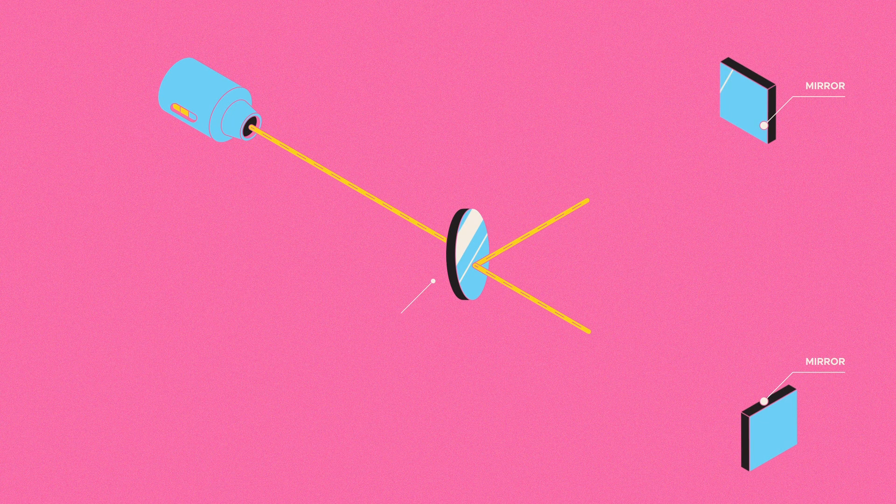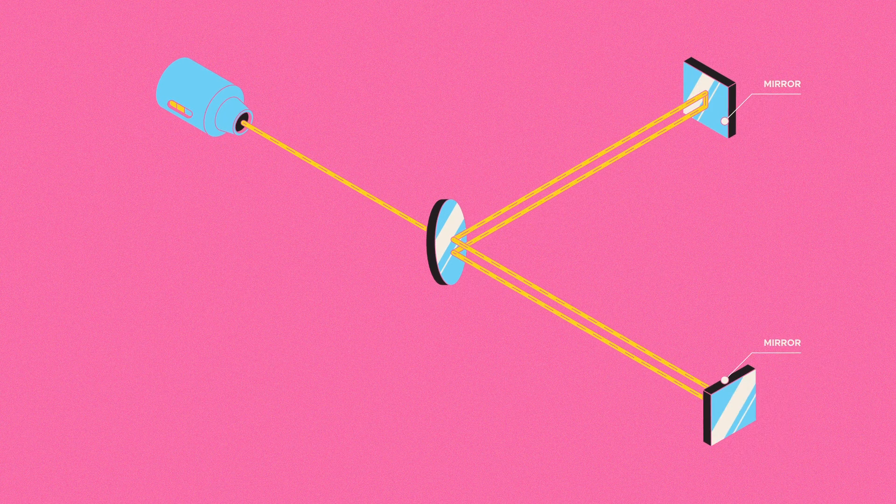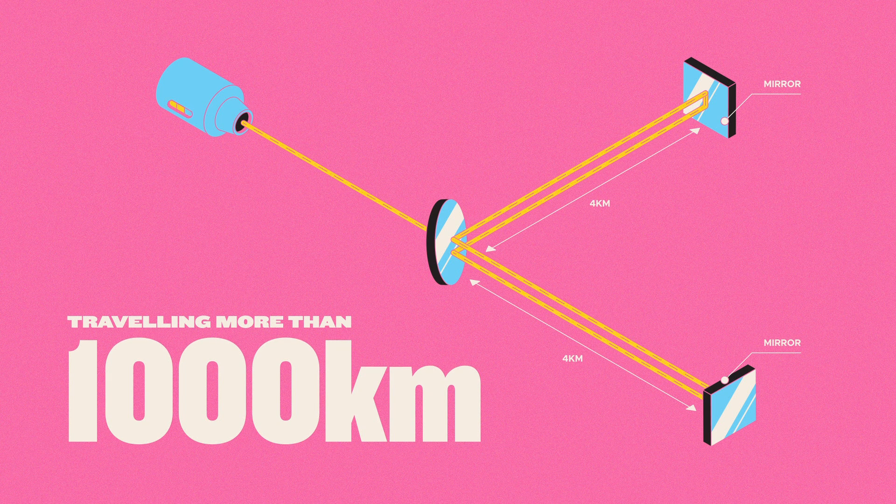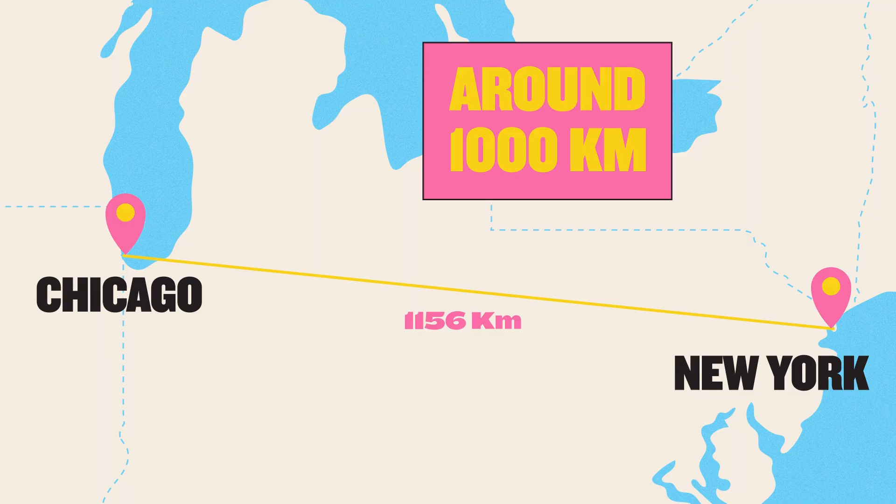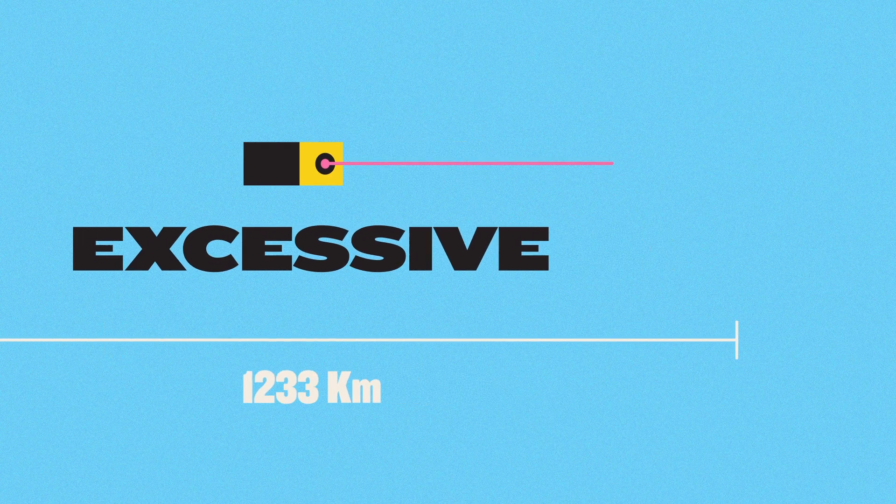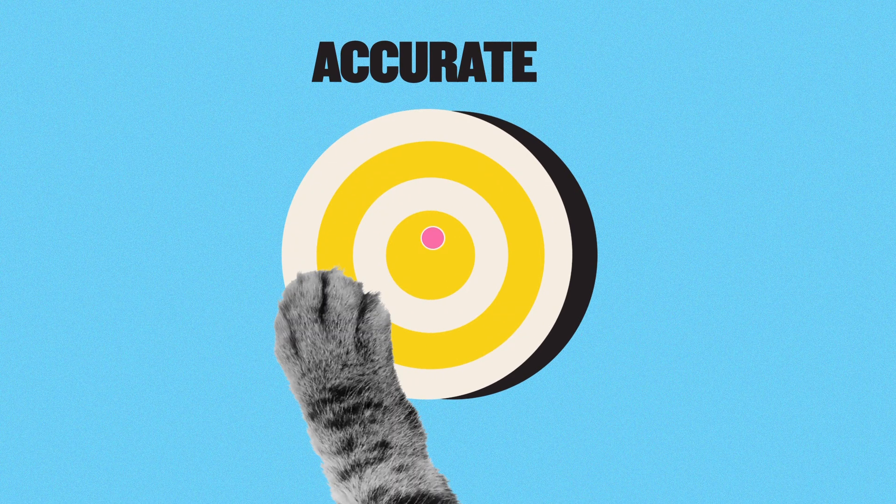At LIGO, a laser is fired at a beam splitter, and the two beams are reflected back and forth between two mirrors four kilometers apart, traveling more than 1,000 kilometers each in total. That's around the distance from New York to Chicago, which might seem excessive, but the further the lasers travel, the more accurate the experiment.